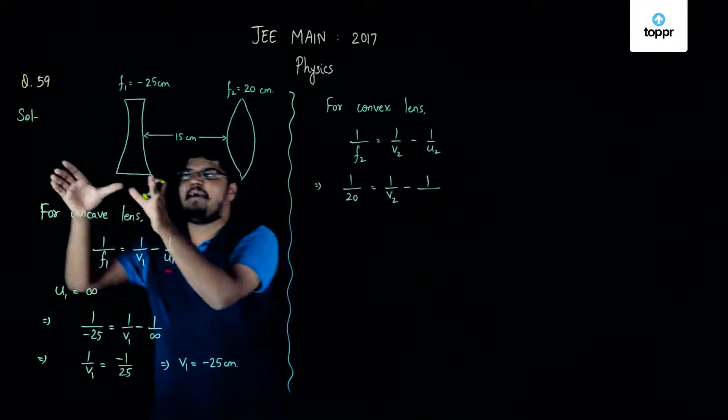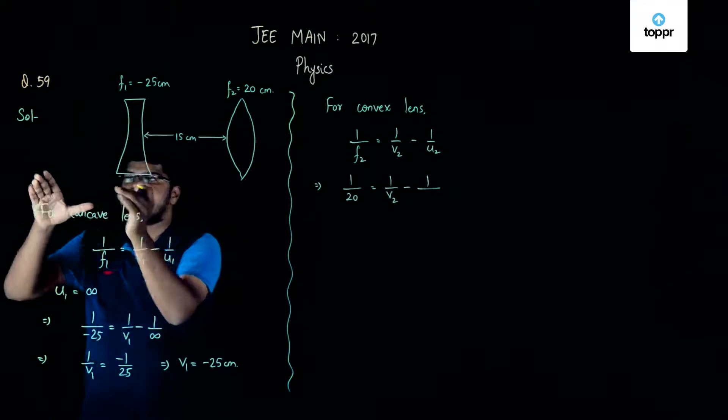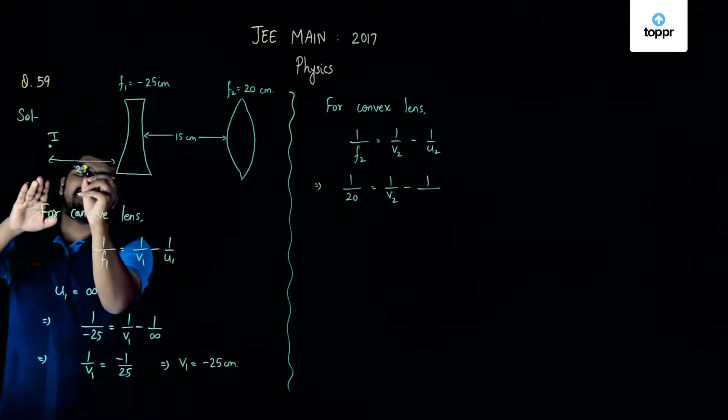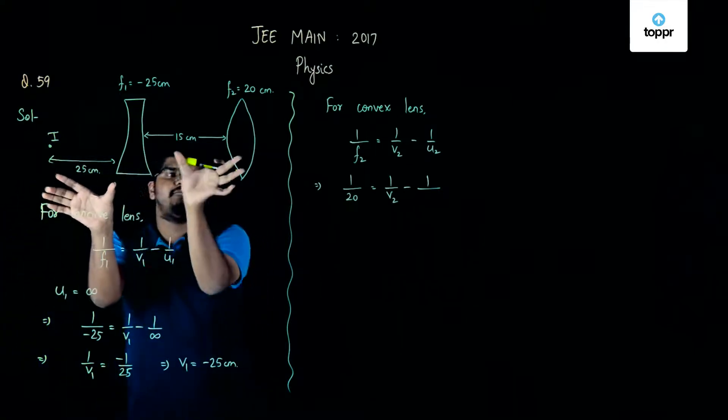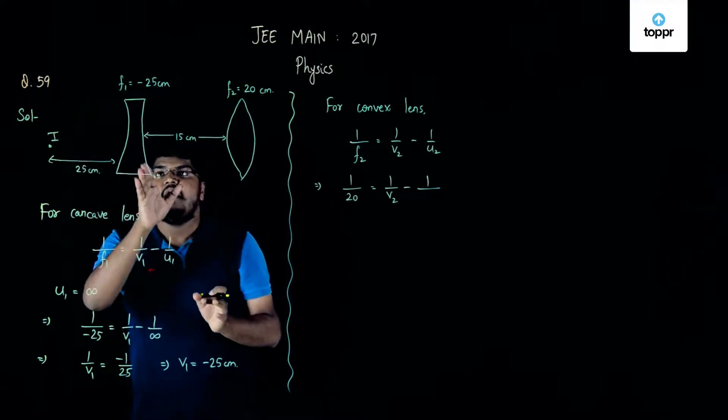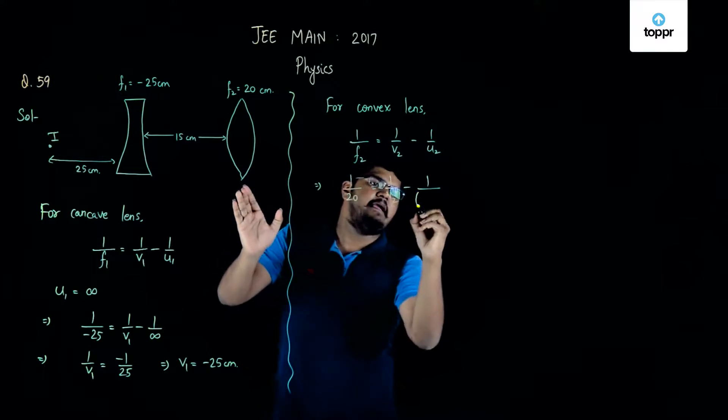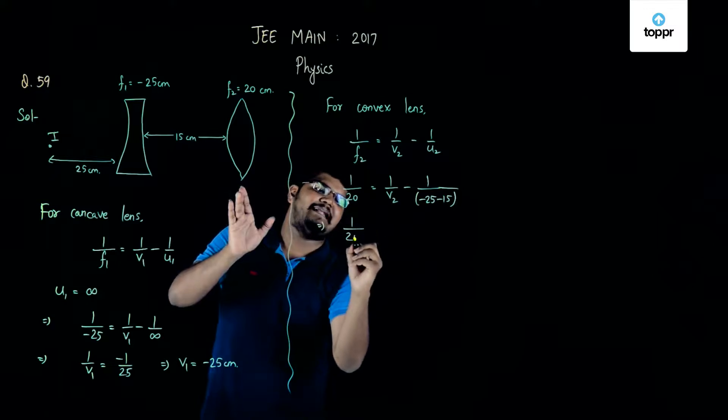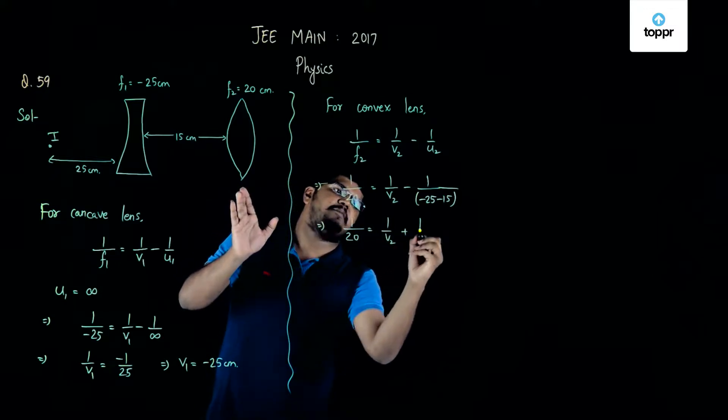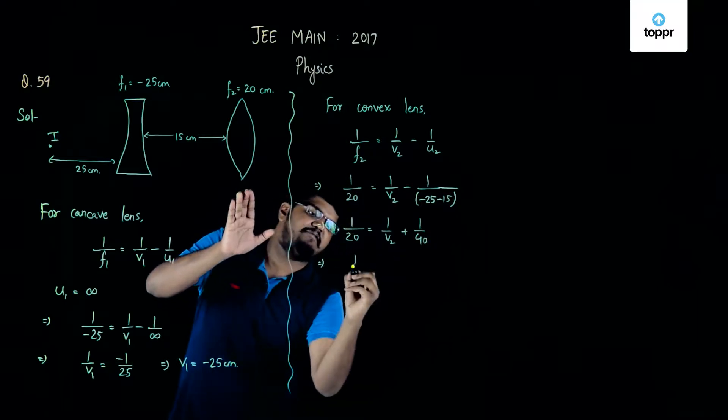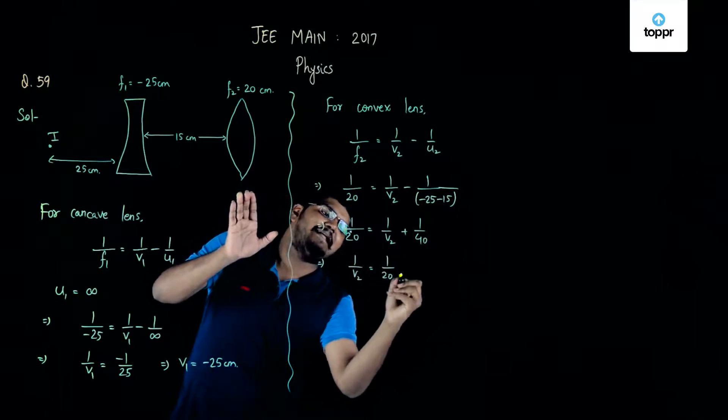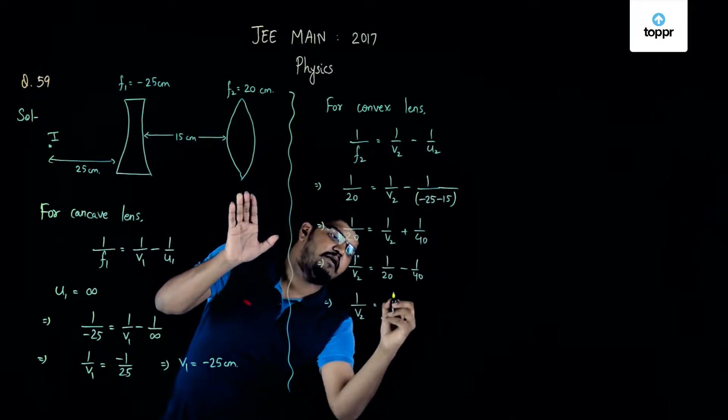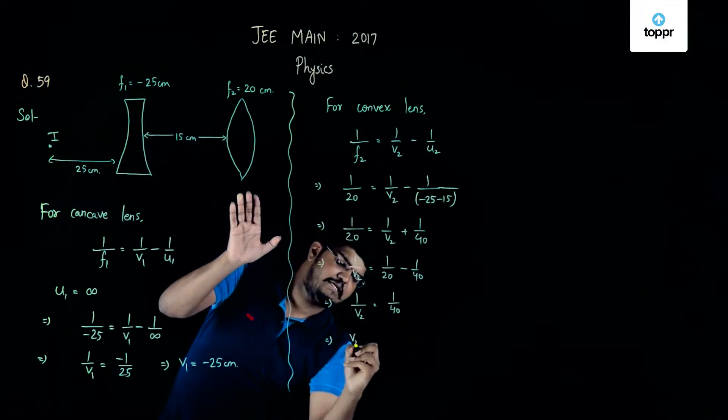Now, this u2 will be considered as minus 25 centimeter which is the image from the diverging lens and at the same time it will add up with the 15 centimeter, which is the distance between the diverging lens and the converging lens. So, it will be minus 25 minus 15. Now, if we simplify this it will become 1 upon 20 is equal to 1 upon v2 plus 1 upon 40 and if we simplify this then 1 upon v2 will be equal to 1 upon 20 minus 1 upon 40 which will give us 1 upon v2 is equal to 1 upon 40 that is v2 is equal to 40 centimeter.